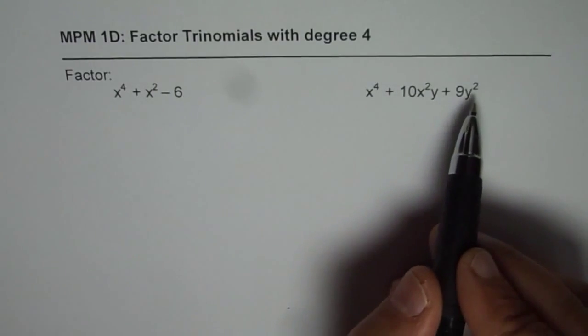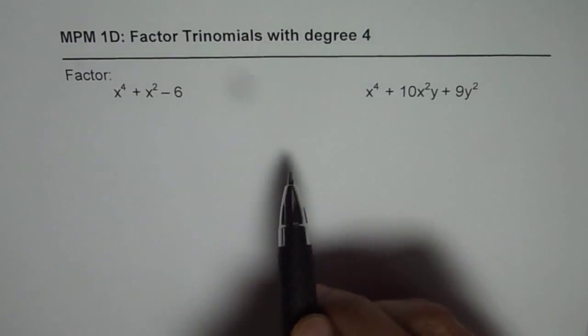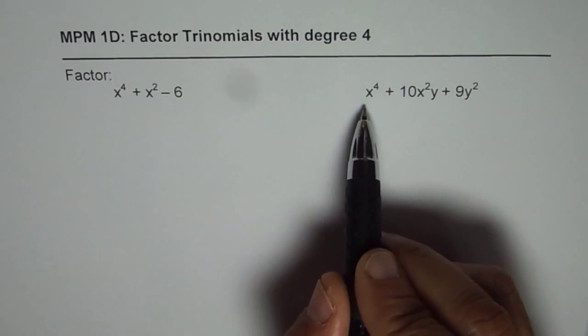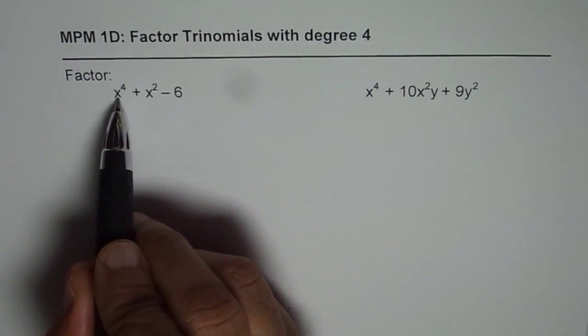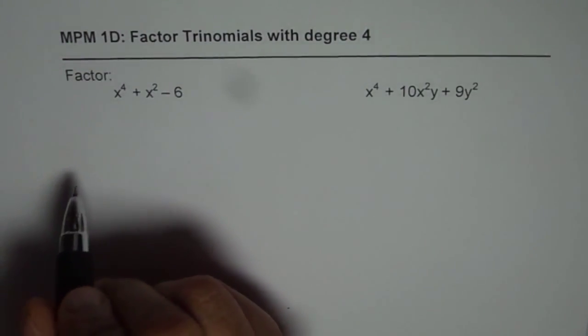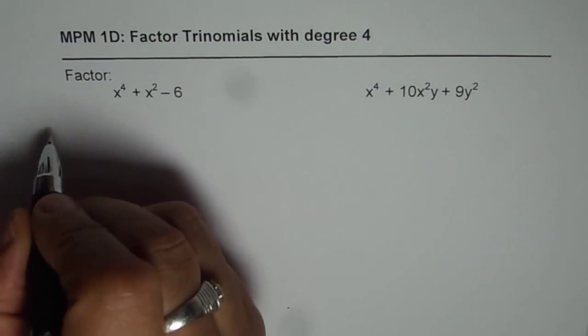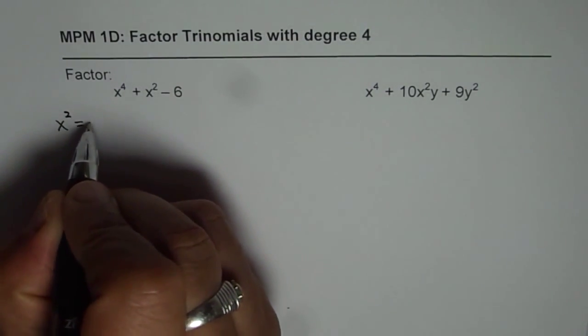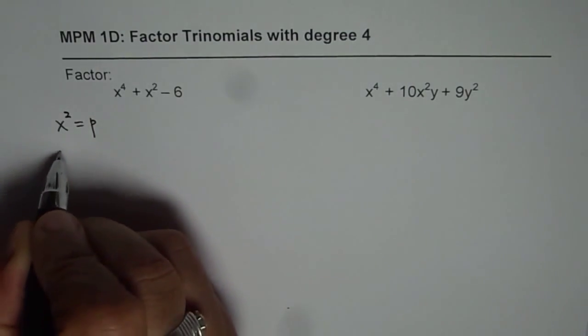When we say degree is 4, that means the highest exponent of any term is 4. So this is the highest exponent. In such cases, you can substitute x² as p. In that case, x⁴ will be p².